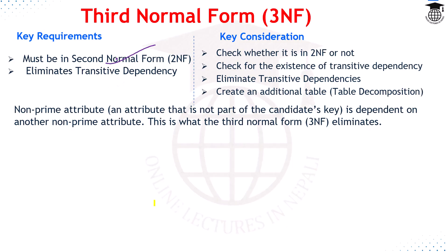For third normal form, the relation must first be in 2NF, and then there must be no transitive dependency. In 2NF we eliminate partial dependency; in 3NF we eliminate transitive dependency. To convert a relation to 3NF, we check whether transitive dependency exists and eliminate it by creating additional tables.